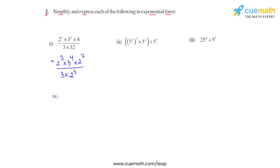We simplify the numerator first. We have 2 raised to 3 times 2 raised to 2 — the bases are same, so we use the product law of exponents: keep the same base and add the powers. So 3 plus 2 gives us 5, resulting in 2 raised to 5, times 3 raised to 4, divided by 3 times 2 raised to 5.